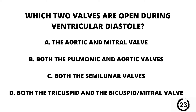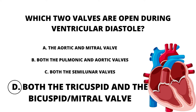Question number seventeen. Which two valves are open during ventricular diastole? A. The aortic and mitral valve. B. Both the pulmonic and aortic valves. C. Both the semilunar valves. Or D. Both the tricuspid and the bicuspid or mitral valve. Our answer here is D. Both the tricuspid and the bicuspid or mitral valve.